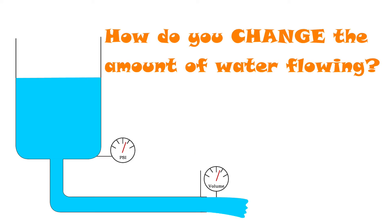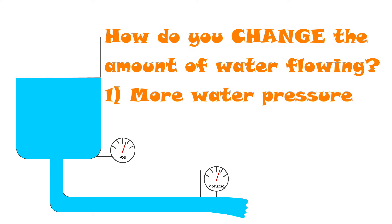Now imagine you wanted to change how much water is coming out of the pipe — what could you change? In this illustration there are two things. Firstly, you could change the water pressure, which is the equivalent of increasing the voltage in a battery. The more pressure you have, the faster the water is going to come out, just as if you increase voltage, you will also increase the current flow.